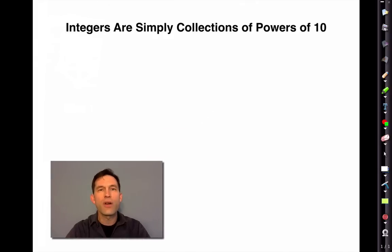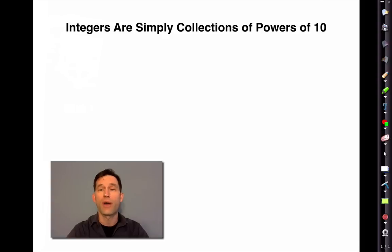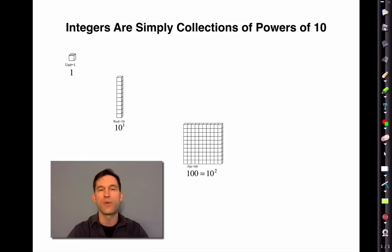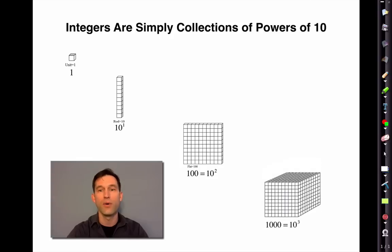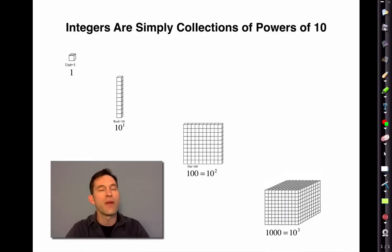Now, we start a discussion about polynomials, believe it or not, with integers. Integers are simply collections of powers of 10. We're not talking fractions here, just plain integers. We've got one unit, then we collect 10 of those and we have 10 units, collect 10 of those and we have 100 units, collect 10 of those and we have 1,000 units. So we have 10 to the first — that's 10 — 10 to the second is 100, 10 to the third is 1,000, 10 to the fourth would be 10,000, 10 to the fifth would be 100,000, and so on.